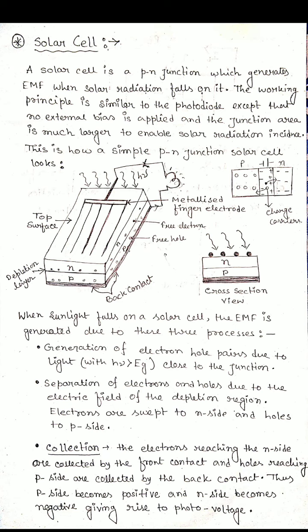Thus, the P side becomes positive and the N side becomes negative, giving rise to photo voltage. Now if we connect one wire between these two metallic surfaces — one with the finger-like electrode and another with the back contact as shown in this diagram — the charge carriers now get a path to move. So the electrons and holes move inside that path, and if we connect any device — bulb, fan, anything — they will work properly, because due to the motion of the charges we get the electric current. I hope it is clear now how the solar cell works and how EMF is generated due to these three processes.